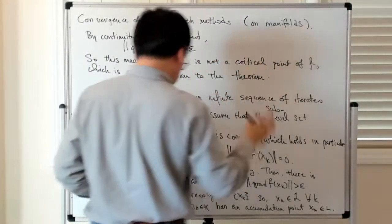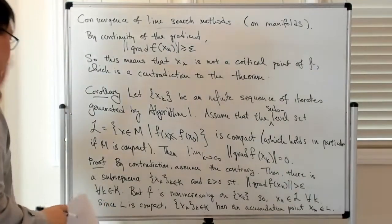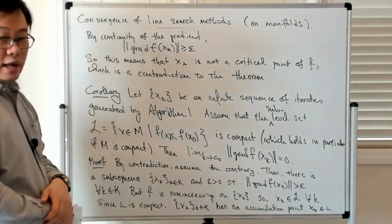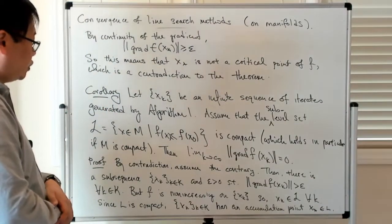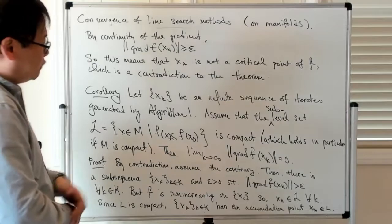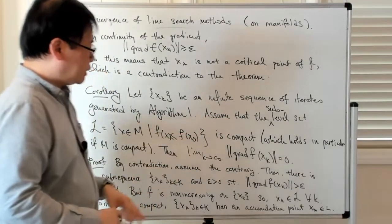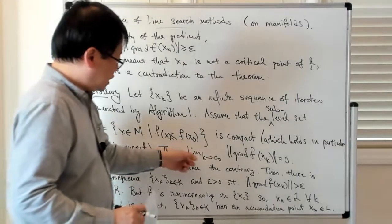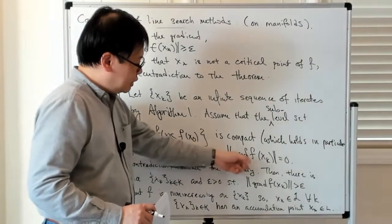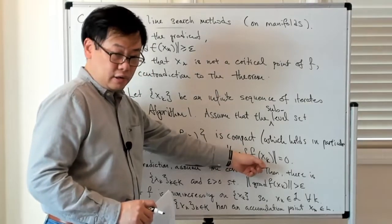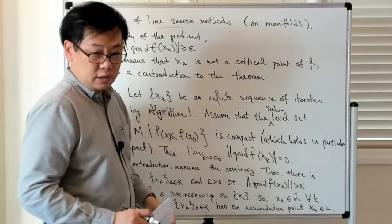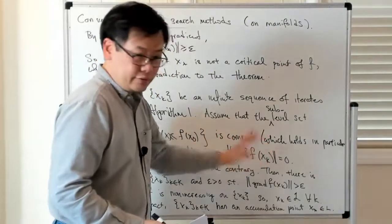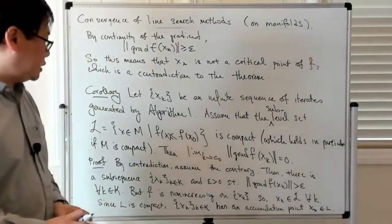So that proves what we need: if you have this infinite sequence of iterates generated by this line search algorithm on manifolds, then if the sub-level sets of the cost function are compact, the limit as k tends to infinity of the norm of the gradient of f evaluated on each iterate goes to zero.